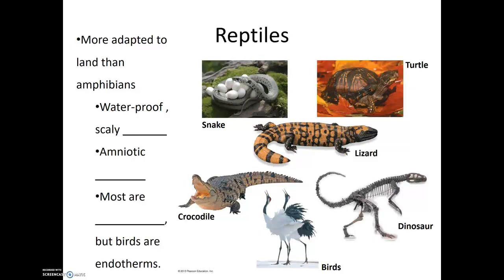The next group of animals are reptiles, and they are more adapted to life on land than the amphibians. A few adaptations that reptiles have include waterproof scaly skin and amniotic eggs. The waterproof skin prevents them from dehydrating as quickly as an amphibian would — with animals like frogs, salamanders, and newts, their skin must be kept moist, and so if they're away from water for long periods of time, they dry out quite quickly. The waterproof skin of the reptile helps it retain its internal moisture. Similarly, the amniotic egg allows reproduction to occur away from standing water. You can almost think of this amniotic egg as a little private personal pond or pool for that developing reptile embryo.